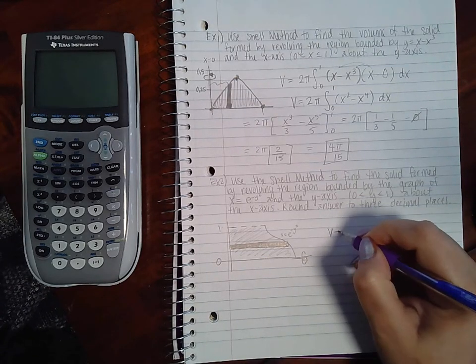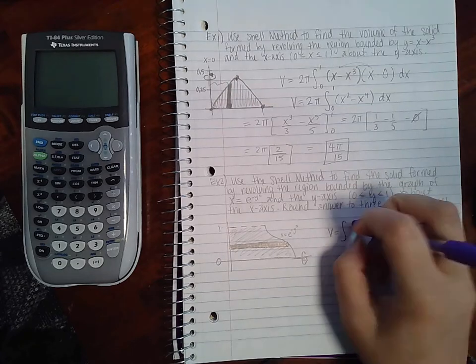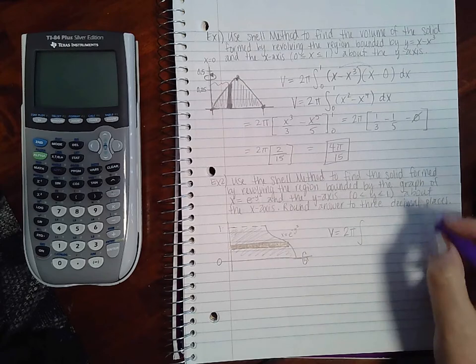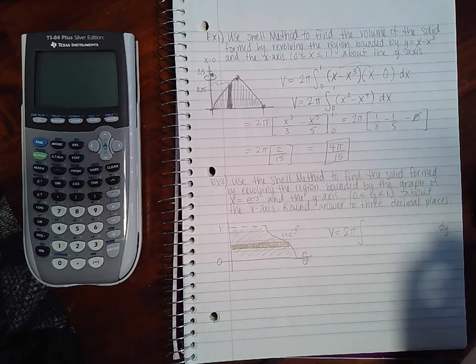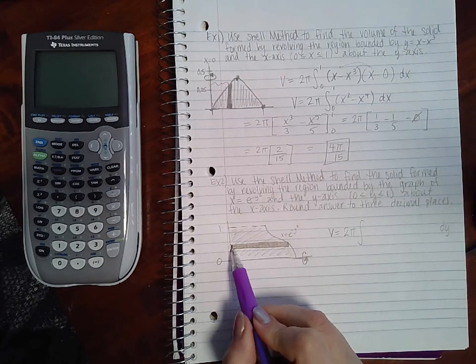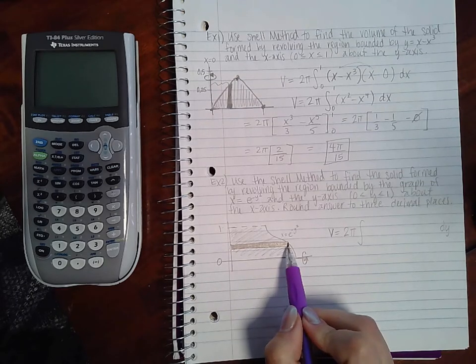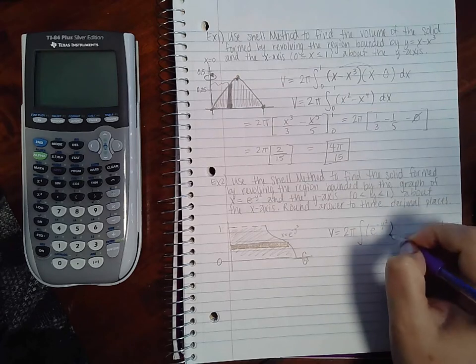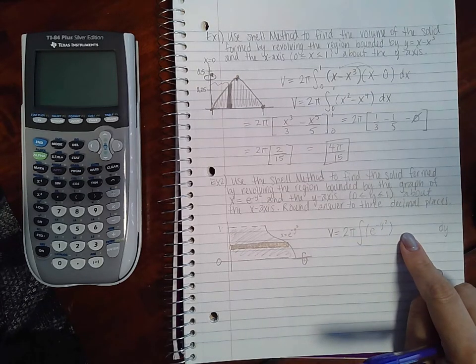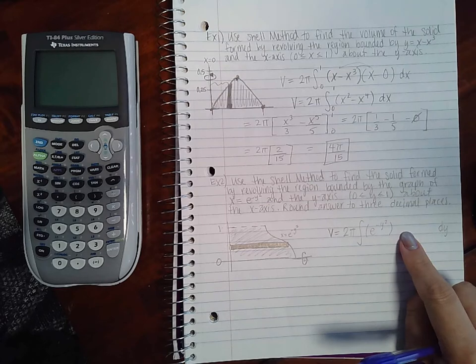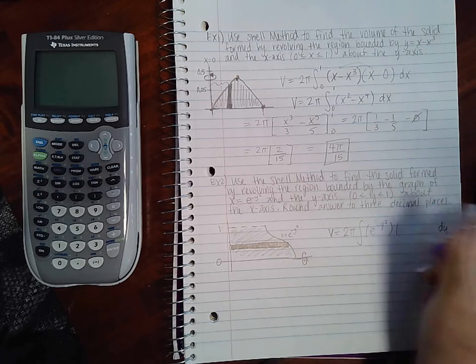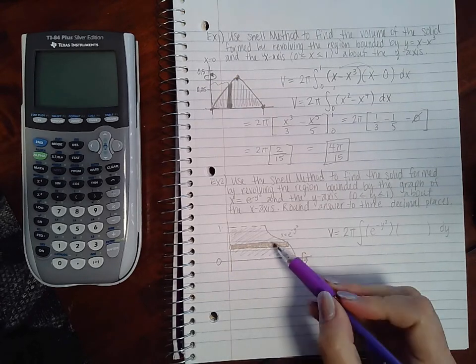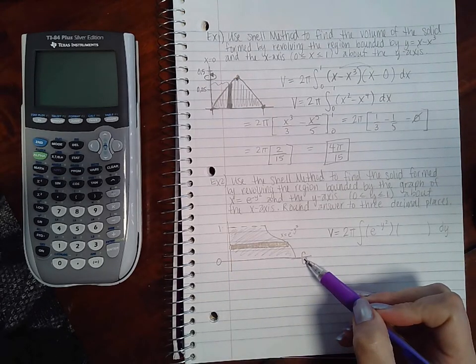And consequently that means I do have to take this integral with respect to y. So my volume is going to be—oops I forgot the 2π—2π, and then it's going to be with dy. Now my height, since it hits all the way down here, is just going to be this function, so e to the negative y².